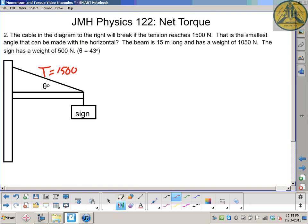So we've got a beam that has a center of gravity there. Its weight is 1050 newtons. We've got a sign down here. Its weight is 500.